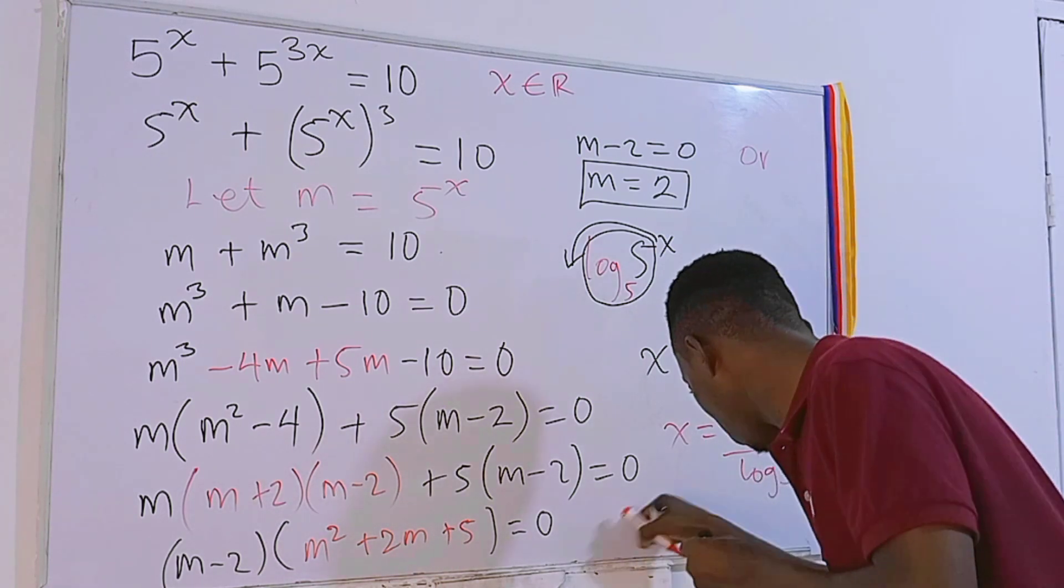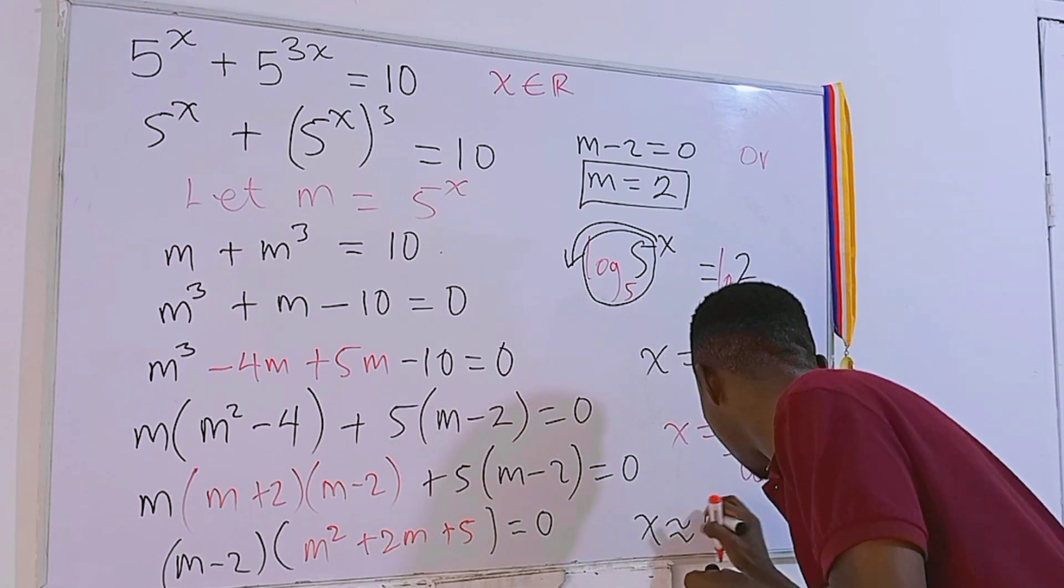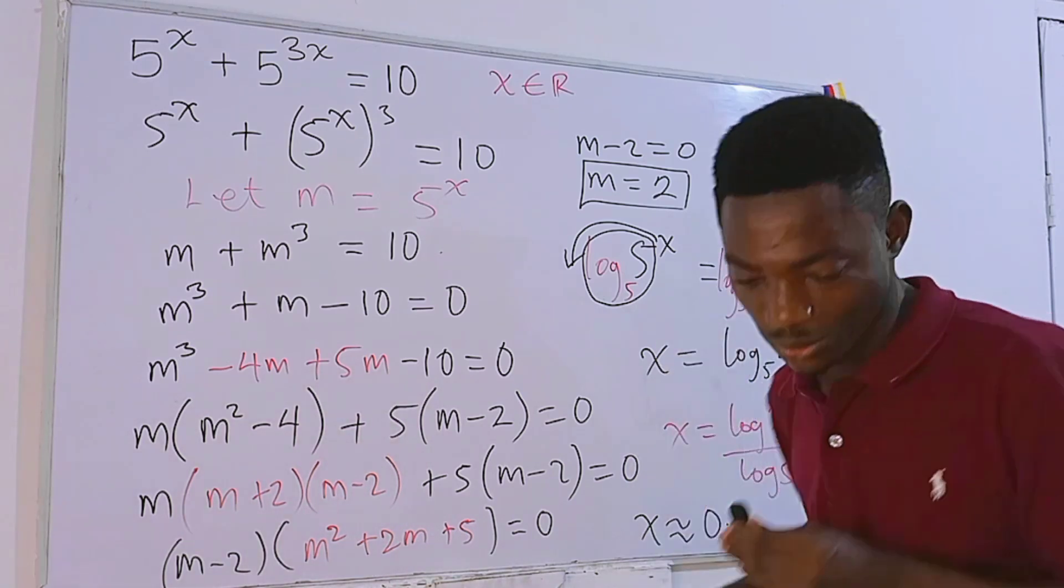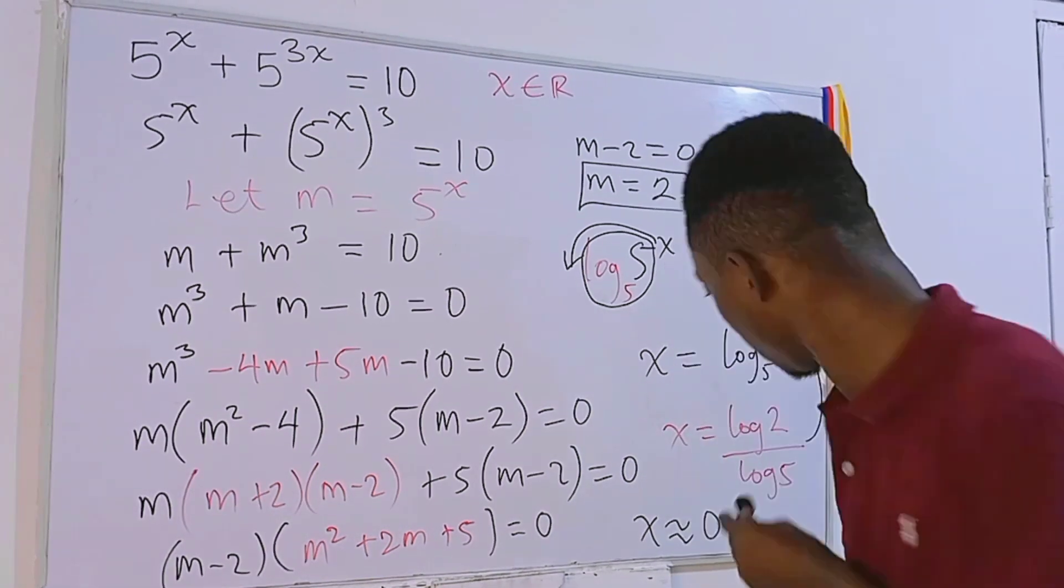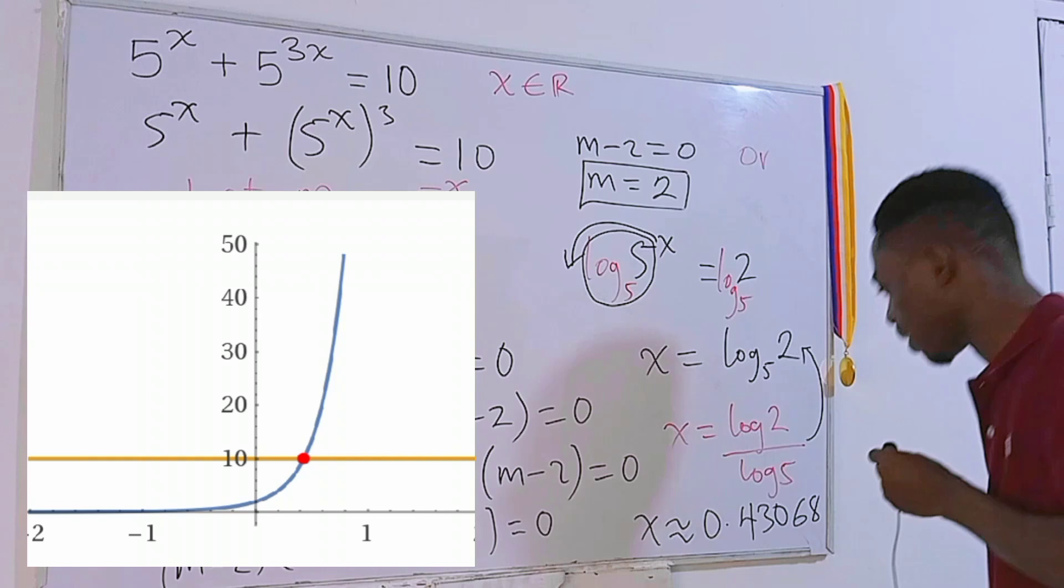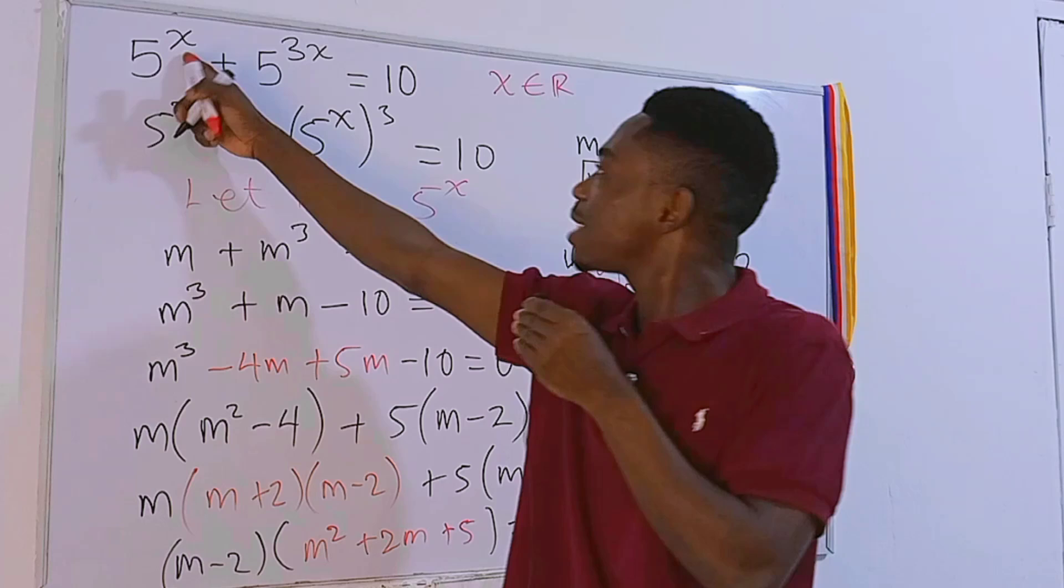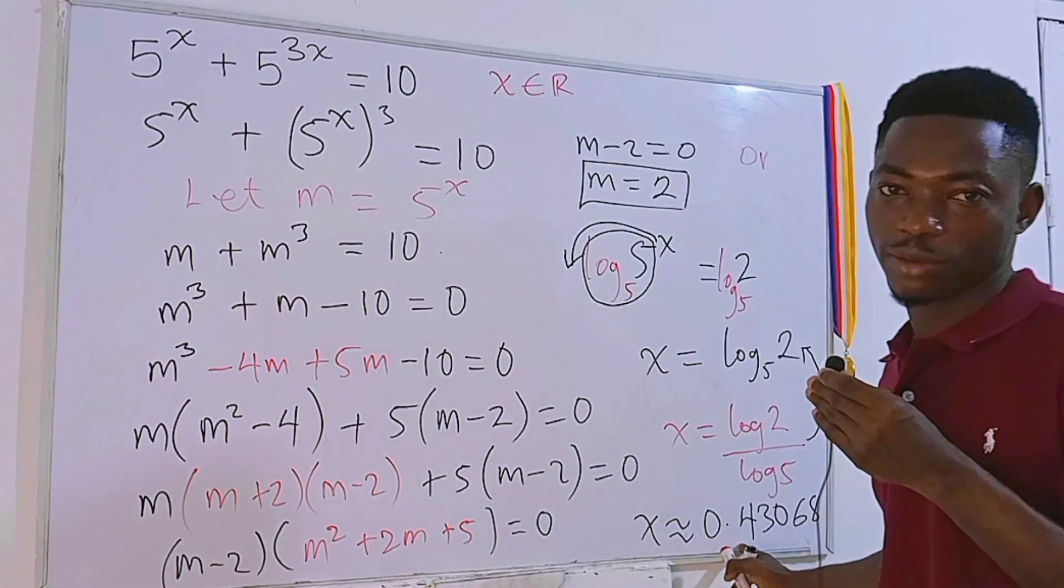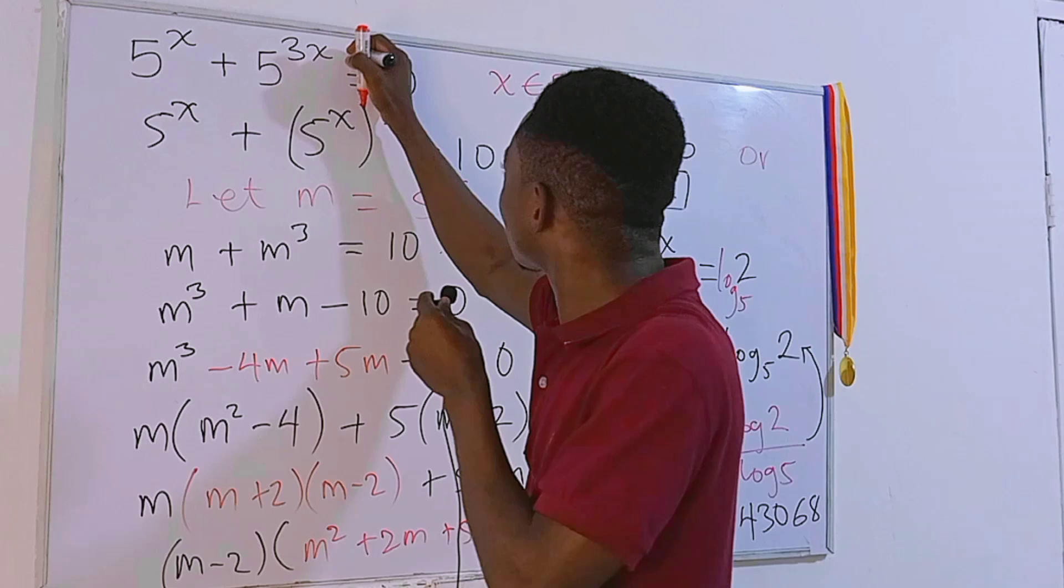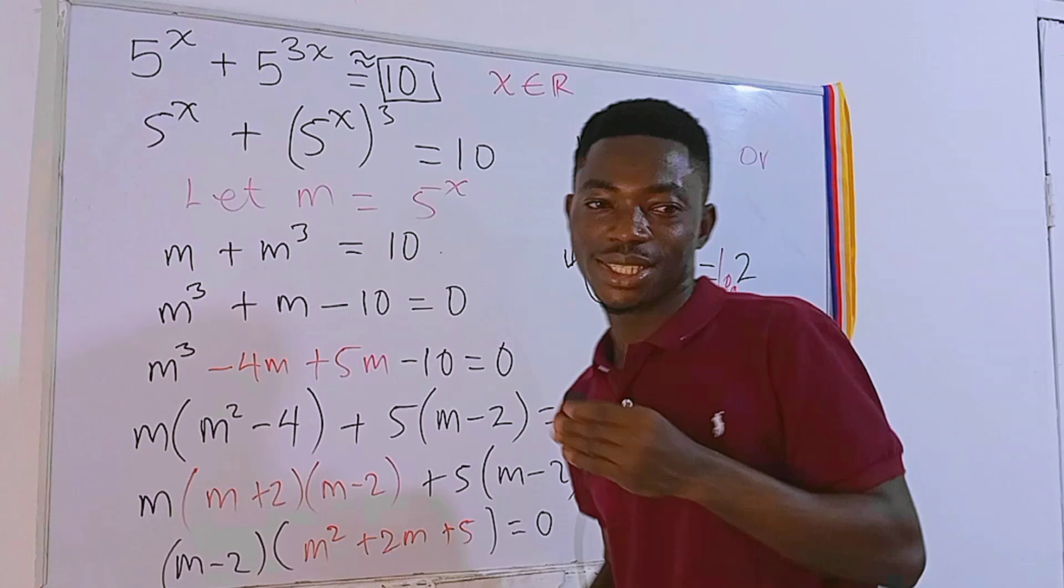Now if you use a calculator for this, we are going to get x approximately equal to, let me check for you really quick, 0.43068. This is the approximated value for x. You go ahead and replace x with this approximated value, you also get approximately equal to 10.